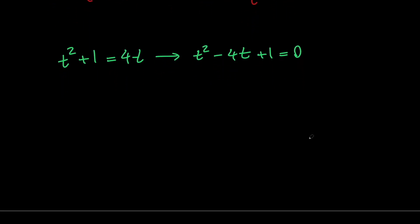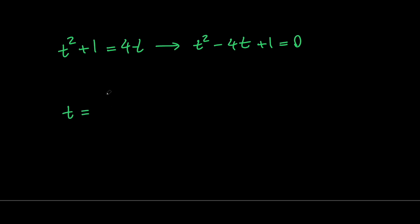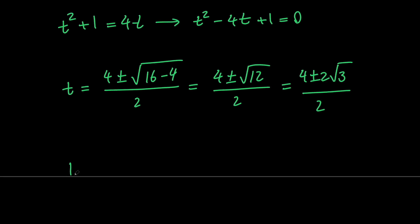By using the quadratic formula, we're going to get t equals 4 plus or minus the square root of 16 minus 4, all divided by 2, which simplifies to 4 plus or minus root 12 divided by 2, which simplifies to 4 plus or minus 2 times root 3 because root 12 is 2 times root 3. Now, we can simplify this even more and we can say that t equals 2 plus or minus root 3.